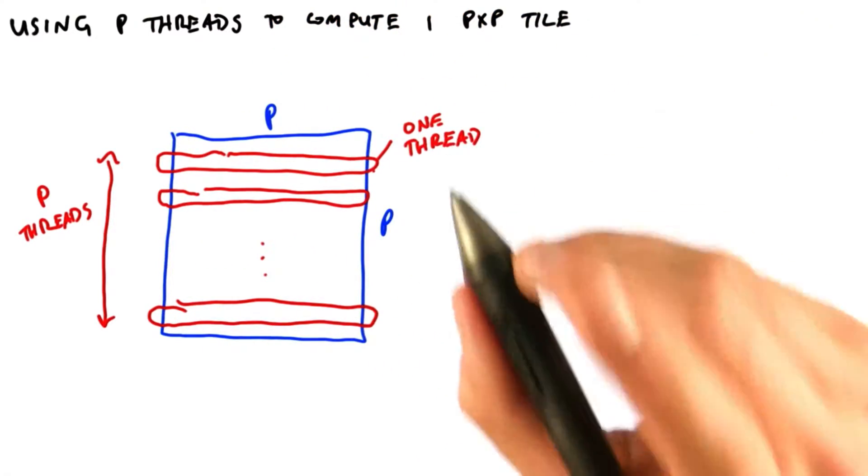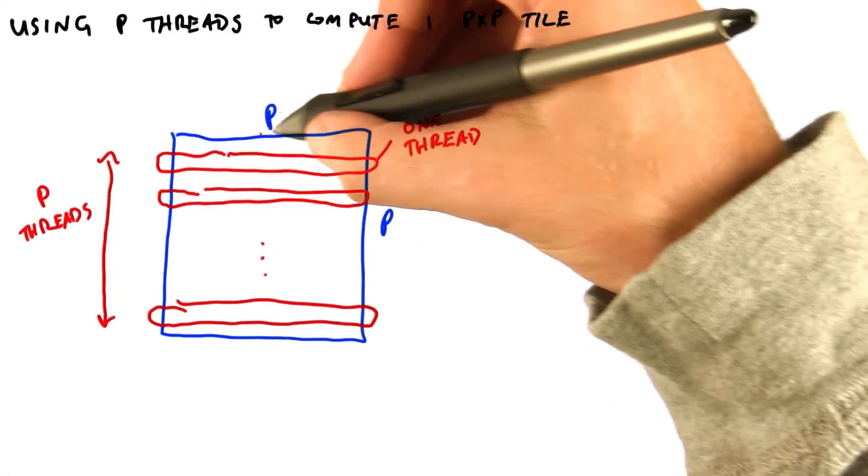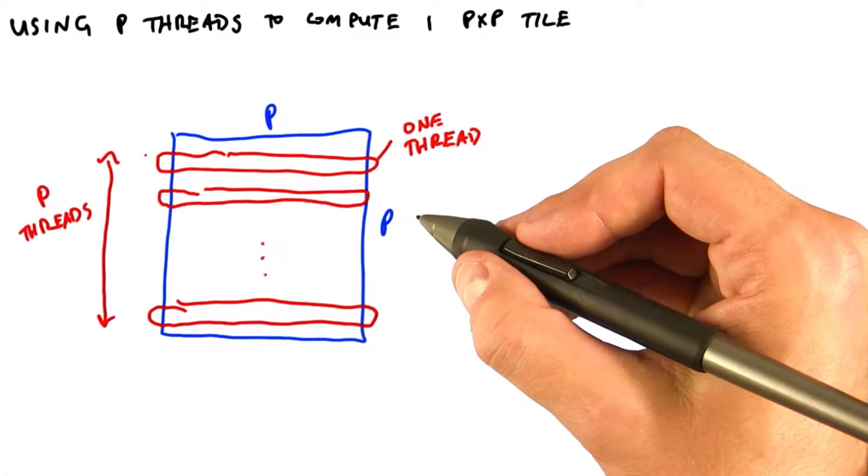Another way to think about it is that one thread, this horizontal thread here, is responsible for applying the force of all p source objects to one destination object.